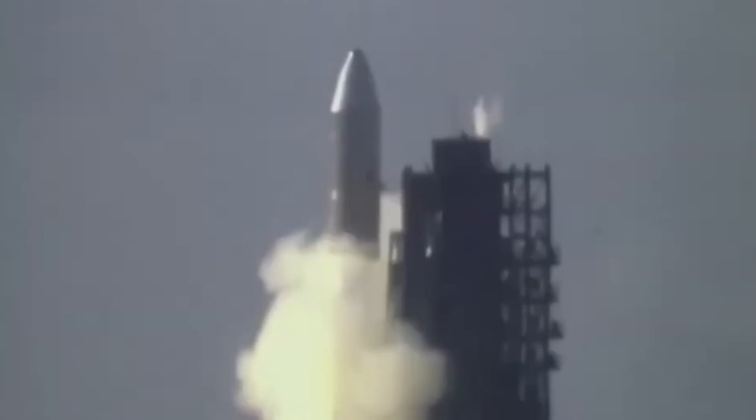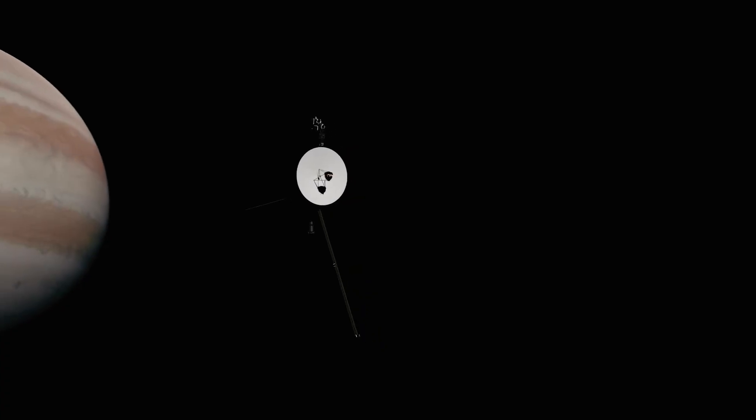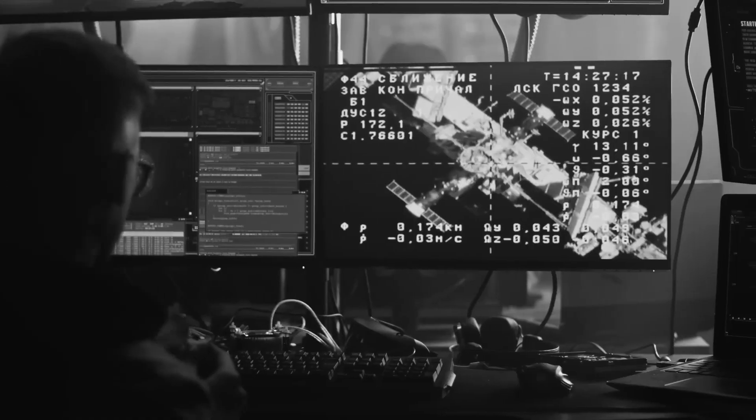But nearly a decade ago, in August 2012, Voyager 1 became the first man-made object to leave our solar system behind. There are more odds of an extraterrestrial life making physical contact with it than us.